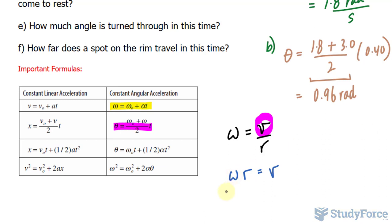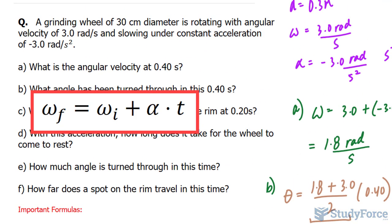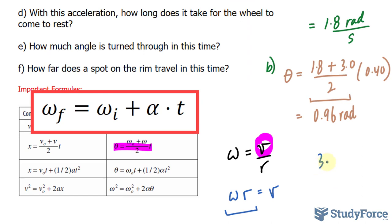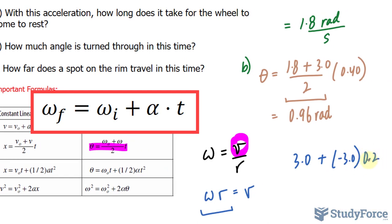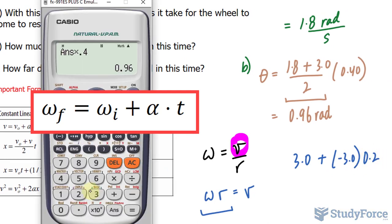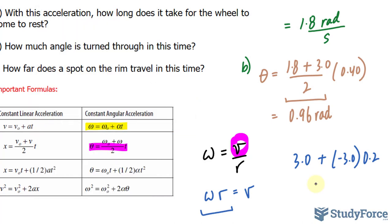Now, to find out information that we need on the left side to get V, specifically omega. Again, I can use that very first relationship, where I have the initial angular velocity being 3.0 plus negative 3.0 times 0.2. Essentially, I'm repeating the same calculation as I did in the first one. You will end up with 2.4 radians per second.